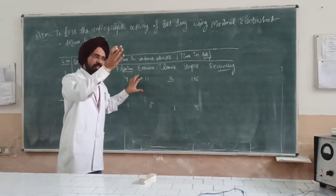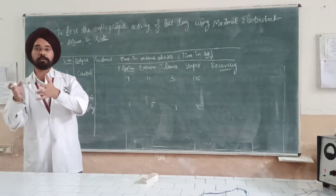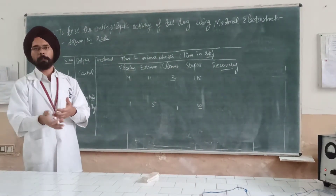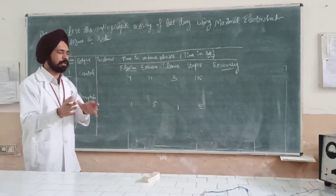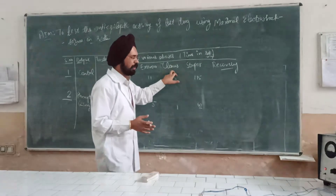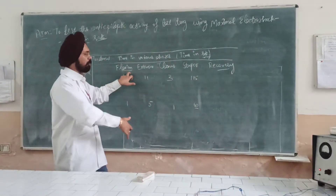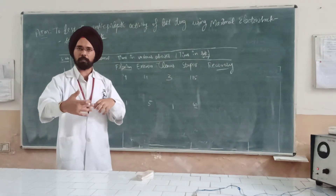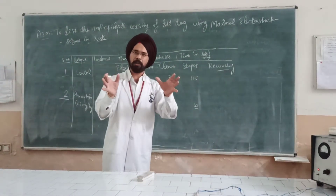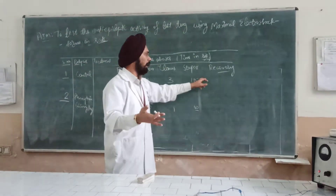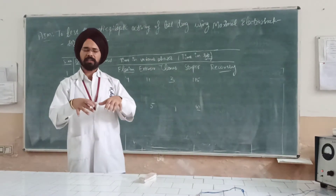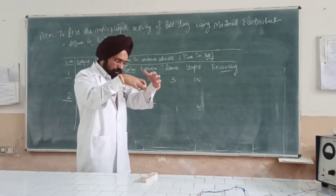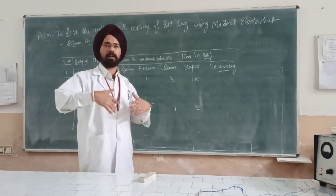This instrument sends an electrical discharge which produces maximum electroshock seizure, which comes under the category of generalized seizures. As already discussed, generalized seizures occur in steps — flexion, extension, clonus phase, stupor, and then recovery. That is, limb movement in the forward direction, then limb movement in the backward direction, then irregular contraction of the entire body, followed by unconsciousness, and then recovery.